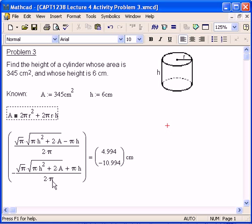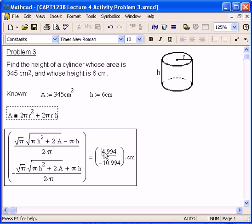Look at the result. There's this and this result. And they work out to be about five centimeters or about minus 11 centimeters. The answer we want is the five centimeter one. How do we know? How could the radius be negative?